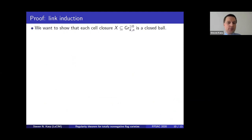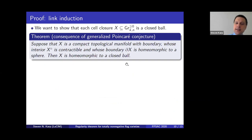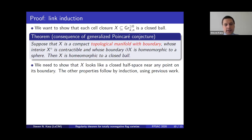Now let me give an outline of our proof. We have X, the closure of a cell in the totally non-negative Grassmannian, and want to show it's homeomorphic to a closed ball. We use deep results from topology — the generalized Poincaré conjecture — which tell us it suffices to check several properties about X. The key property is that X is a topological manifold with boundary at its boundary: for any point y on the boundary of X, locally around y it looks like y is sitting on a hyperplane and X is on one side.